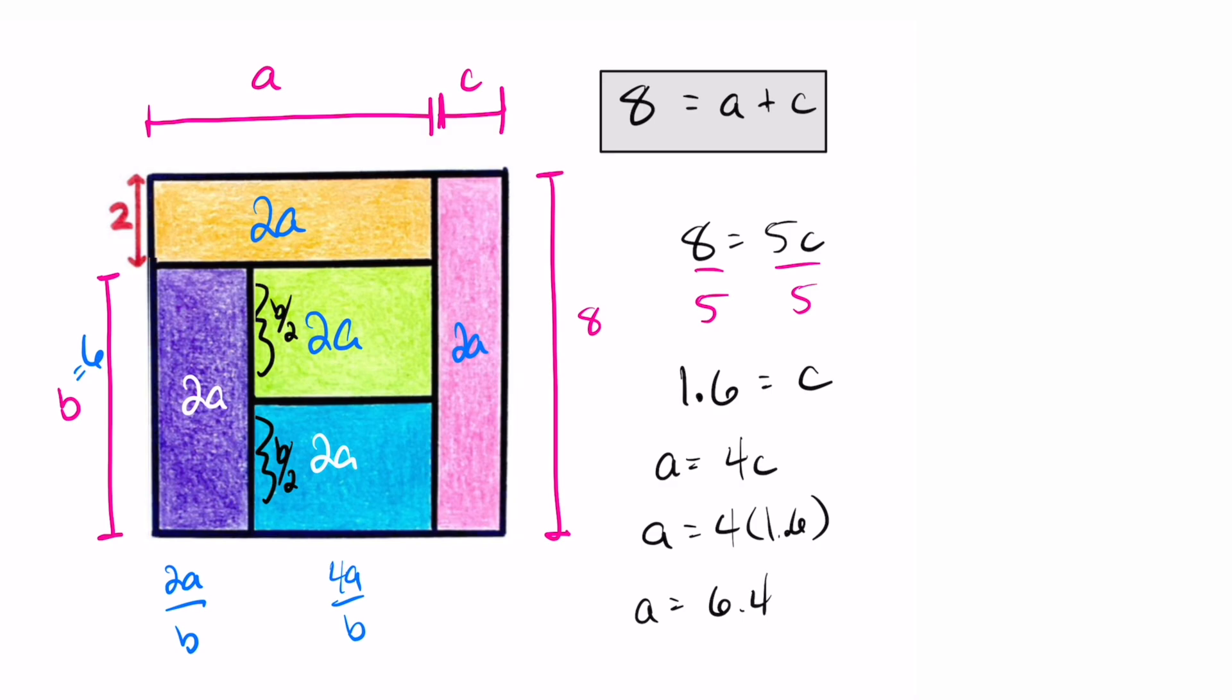And then, just to double-check our work, is it true that 6.4 plus 1.6 is 8? Yes. And so we have not only confirmed that our square is an 8 by 8 square with an area of 64, we have also solved for a and c.